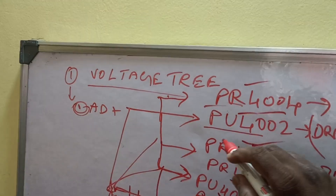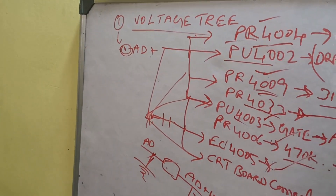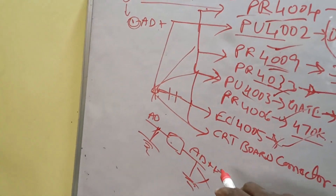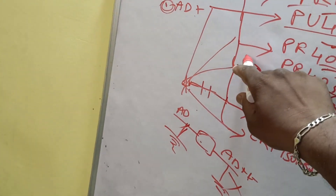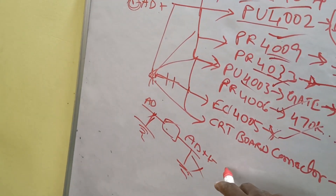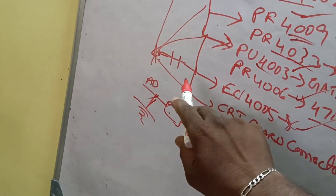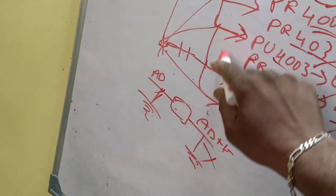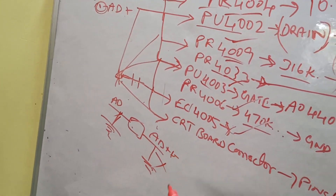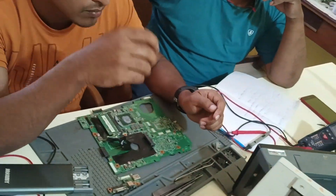So now, to trace all the connections — AD+ is connected to these particular components. If any one component goes, then also you will get AD+ on this side, because you are checking only input sides, not output sides. If it is connected to a capacitor and it is a ground, then all points will be shorted. Like this, you have to do the core test. We will go to the next section next.